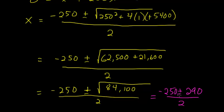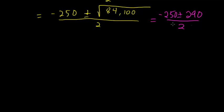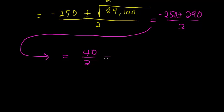So if we do the negative here, we'll end up with a negative number, and the parking lot is a distance, so it can't be negative. So we have to take the positive case here. So this is equal to minus 250 plus 290, so that would be 40 divided by 2, and this is 20. So the parking lot is 20 feet wide.